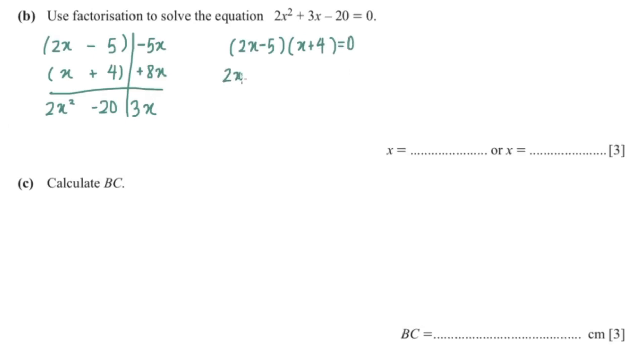So 2x minus 5 equals 0, x would equal 5 over 2. x plus 4 equals 0, x is negative 4. So our answer is 5 over 2 and negative 4. Now they want us to calculate BC.